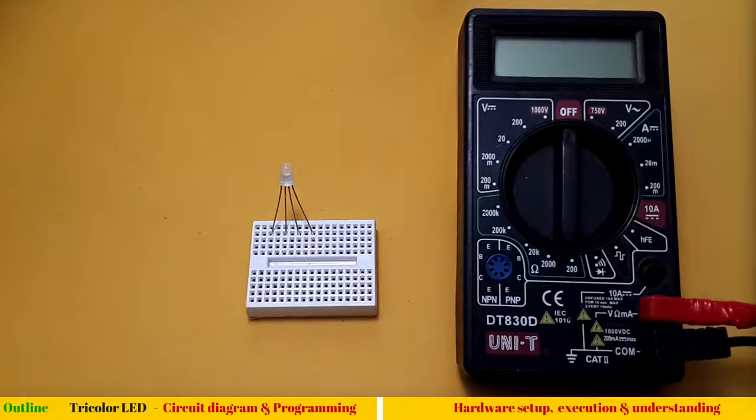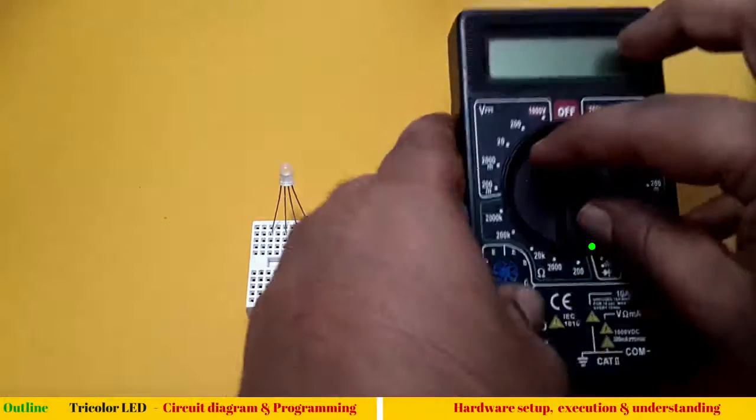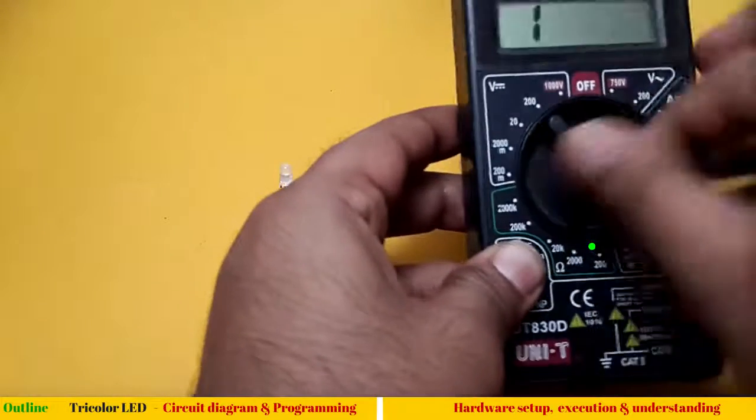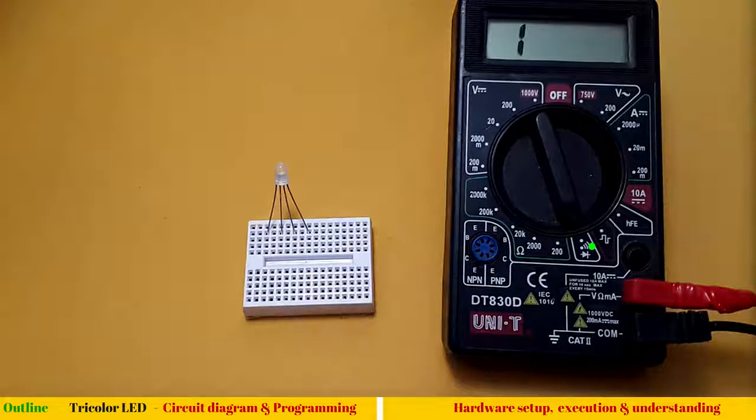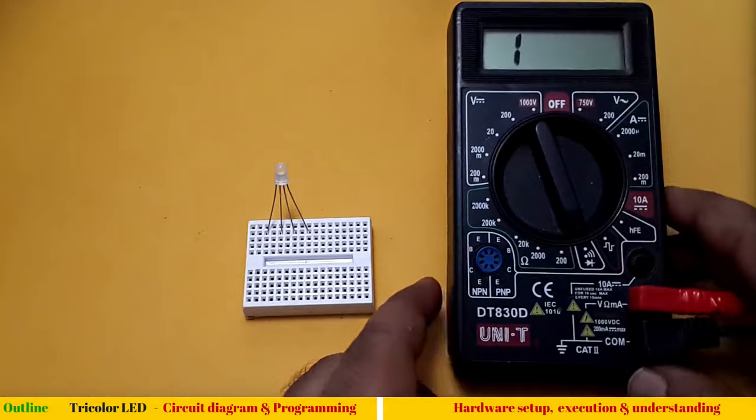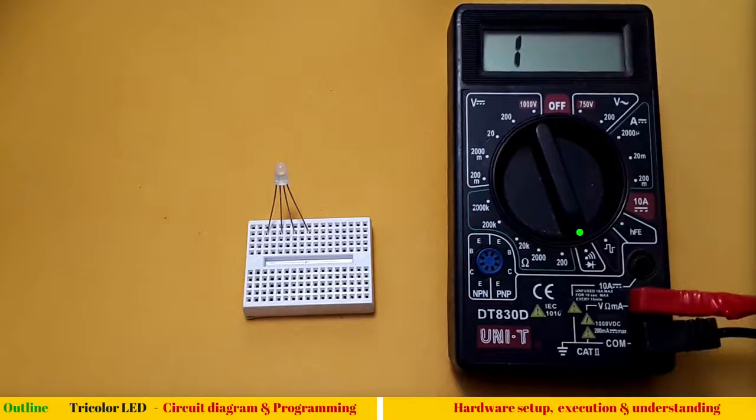What we are interested in is this pin. Let me turn the knob. You can see this arrow is pointing to this diode symbol and a speaker symbol.